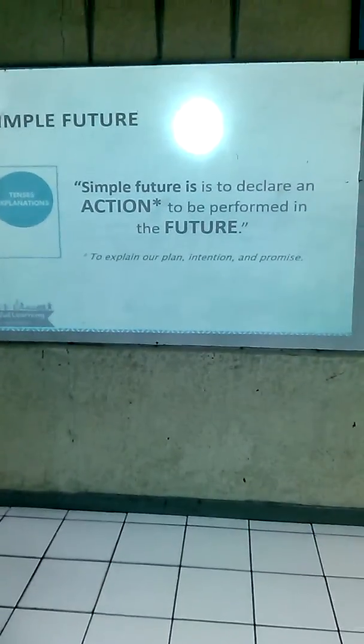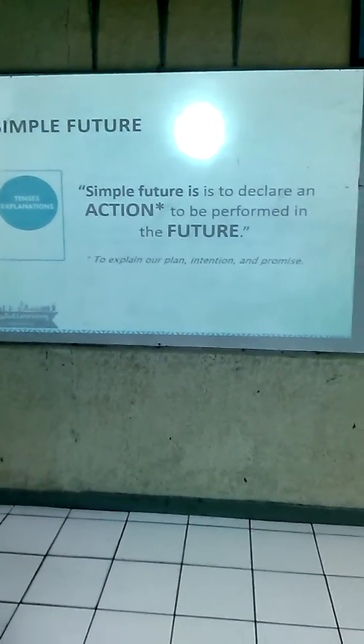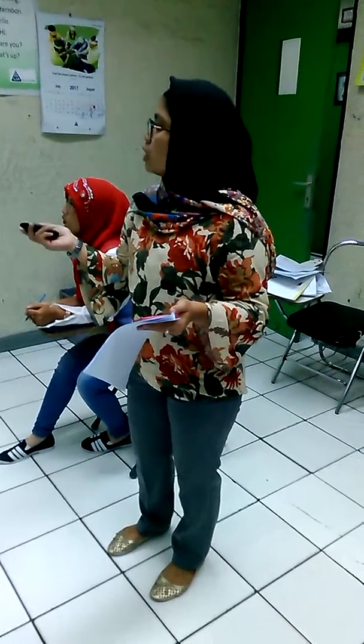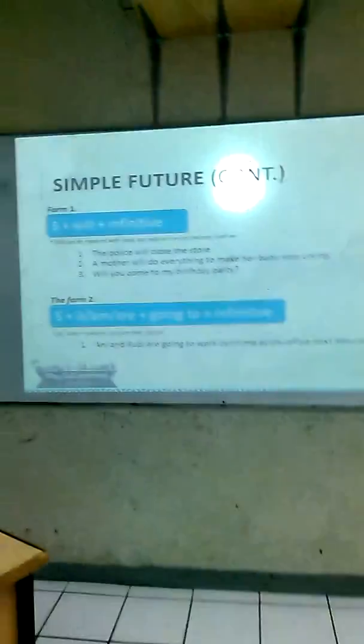For Simple Future, we have two forms. The first form is: subject plus 'will' plus verb or infinitive. And the second form is: subject plus 'am/is/are' plus 'going to' plus verb or infinitive.